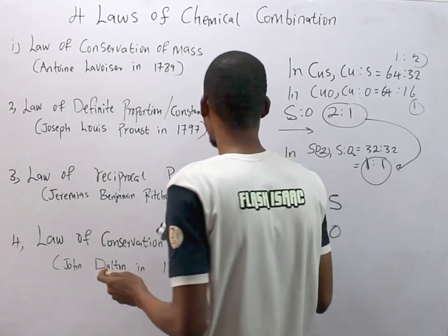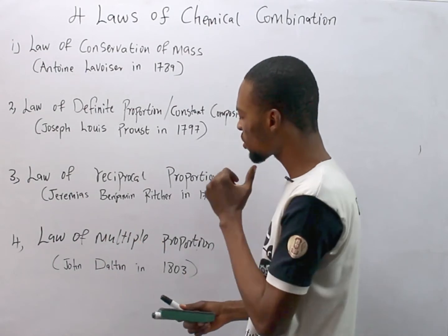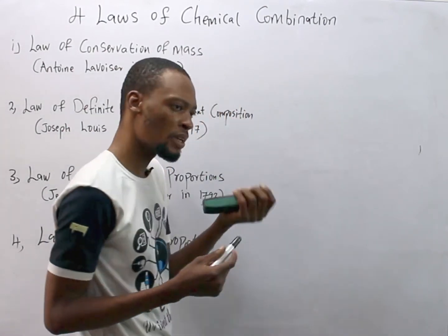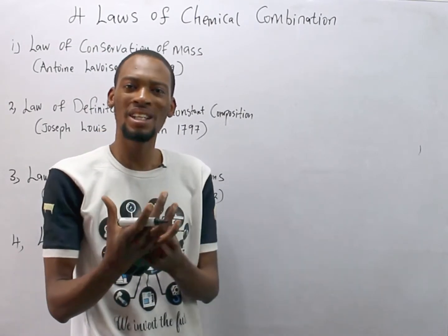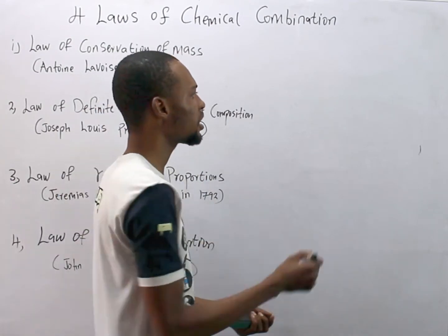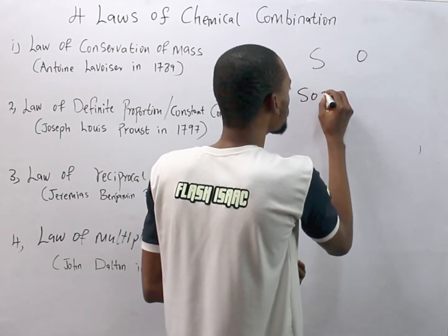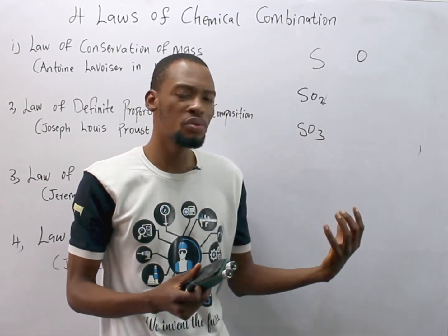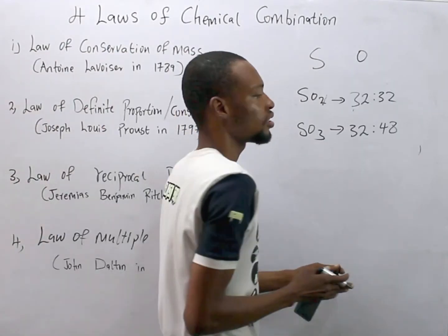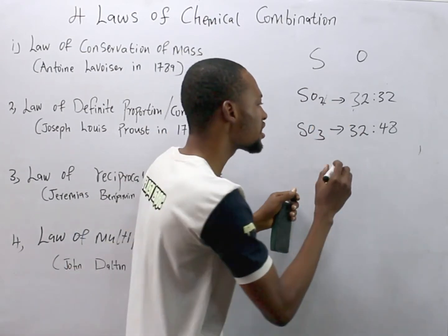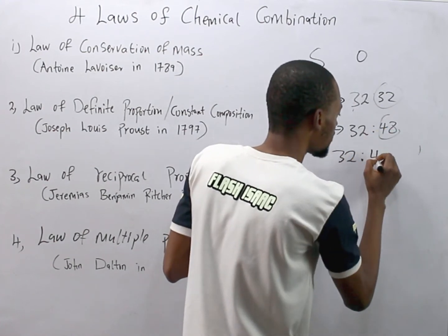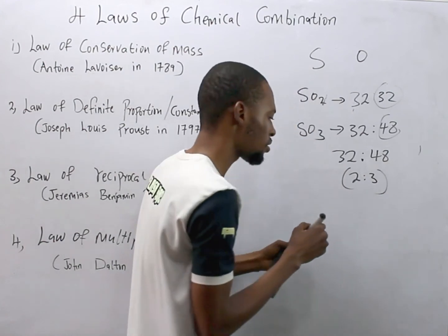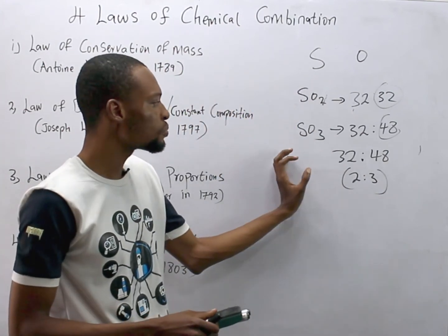The law of multiple proportions was proposed by John Dalton in 1808. It states that if two elements can combine to give more than one compound — for example, sulfur and oxygen can combine to give SO2 and SO3 — the ratios at which they do so are in simple multiple proportions. The ratio of oxygen in SO2 versus SO3 is 32:48, which simplifies to 2:3. These are whole numbers and simple multiples, and that is the law of multiple proportions.